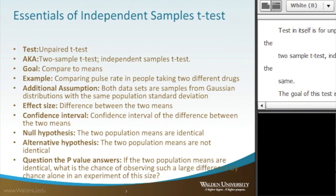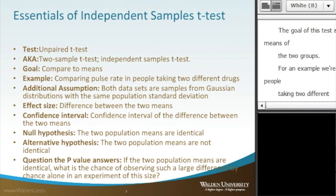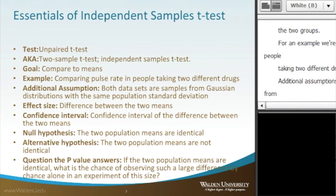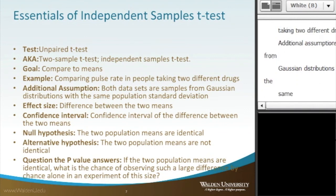For example, we're comparing the pulse rate of people taking two different drugs. Additional assumptions: both data sets are samples from Gaussian distributions with the same population standard deviation.